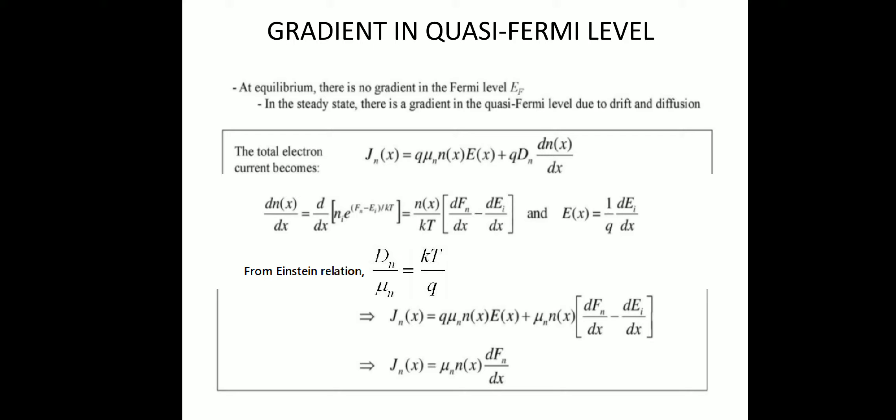In the drift current term: q is charge, μn is mobility, n(x) is electron concentration, and E(x) is electric field. In the diffusion current term: q is charge, Dn is diffusion coefficient, and dn(x)/dx is the gradient of carrier concentration. When excess charge carriers are present, n(x) can be represented as n(x) = ni · e^((Fn − Ei)/kT), where Fn indicates the material has excess charge carriers beyond thermal equilibrium electron and hole concentration.